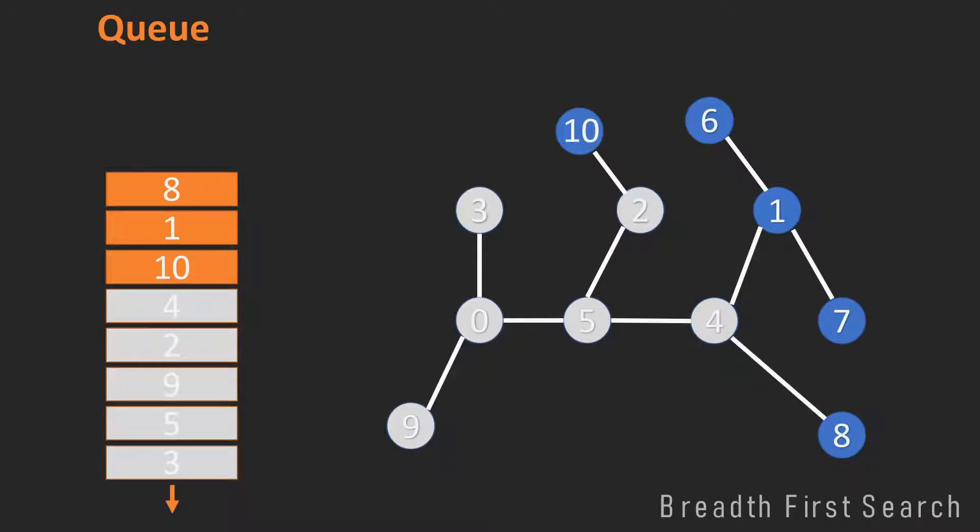Remove 4 from the queue and go on with the 10. The 10 has no unvisited neighbors, so we mark 10 as visited and remove it from the queue. Now 1 is the first element in the queue, so we look at node 1, check its unvisited neighbors, 6 and 7, add them to the queue, and mark 1 as visited.